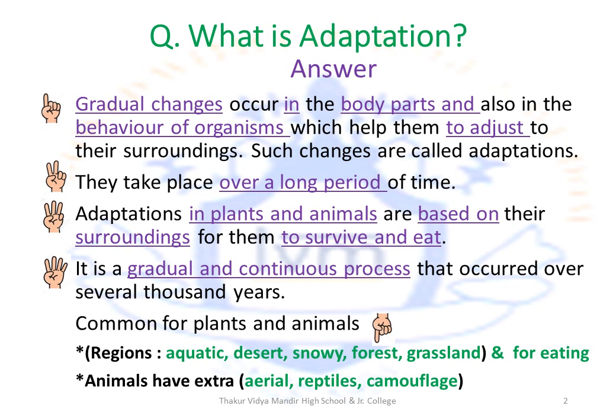We will study the adaptations for plants and animals. Common adaptations for plants and animals are based on the regions wherein they are found — like aquatic, desert, snowy, forest and grassland. Plants and animals also adapt for eating. Animals have an additional adaptation of camouflage. As we don't find plants in the air or cold-blooded plants, we will study adaptations in aerial animals and in reptiles besides the common adaptations seen in plants and animals.